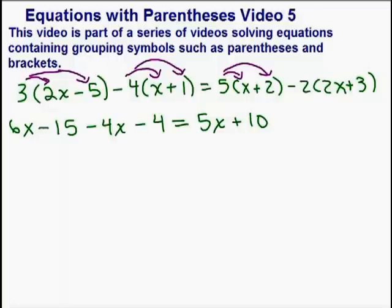And here's another place we have to distribute a negative number. Negative 2 to both numbers inside those parentheses will give me a negative 4x and a minus 6. It's really not hard. I think it's kind of fun, don't you? You just have more numbers but they're doable.